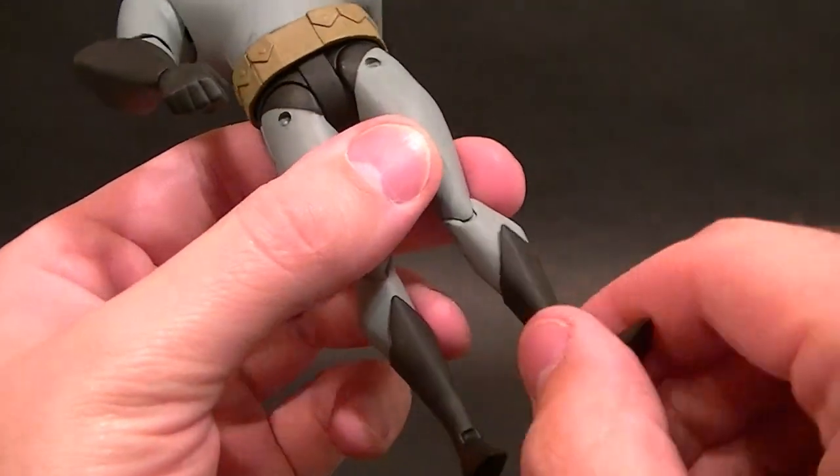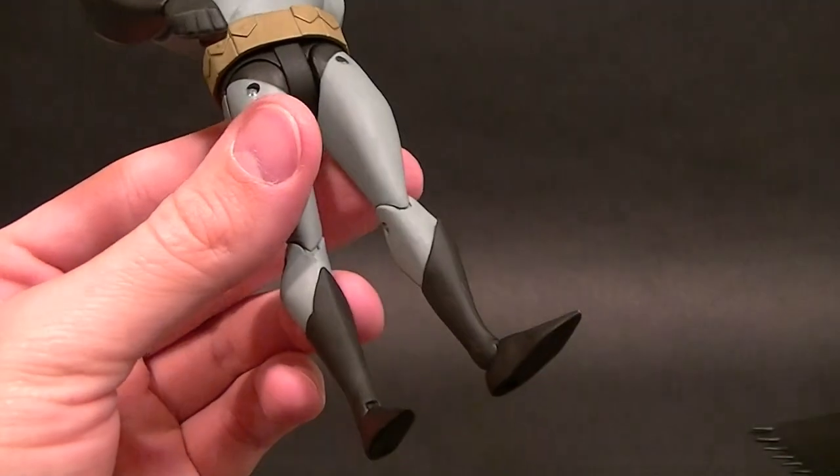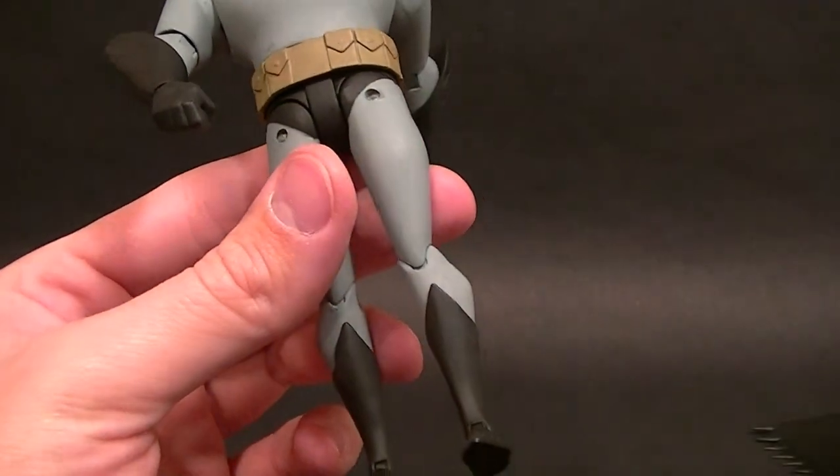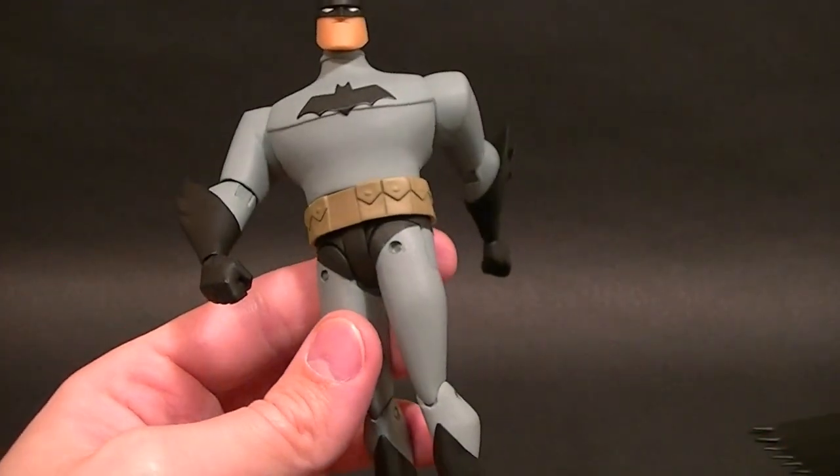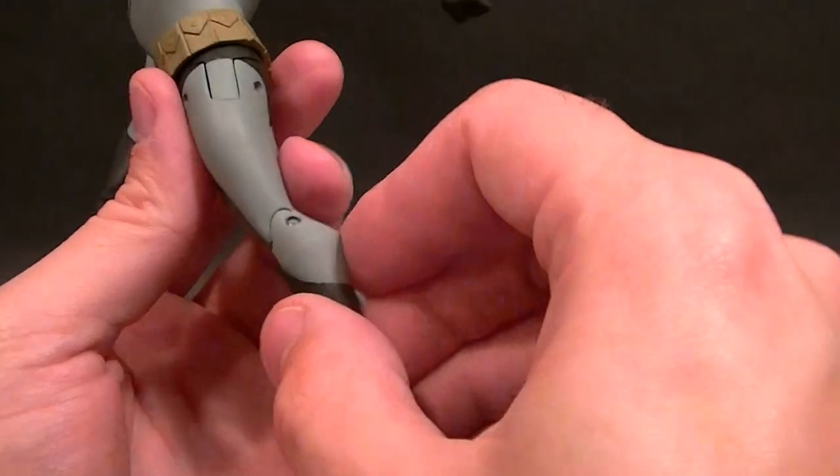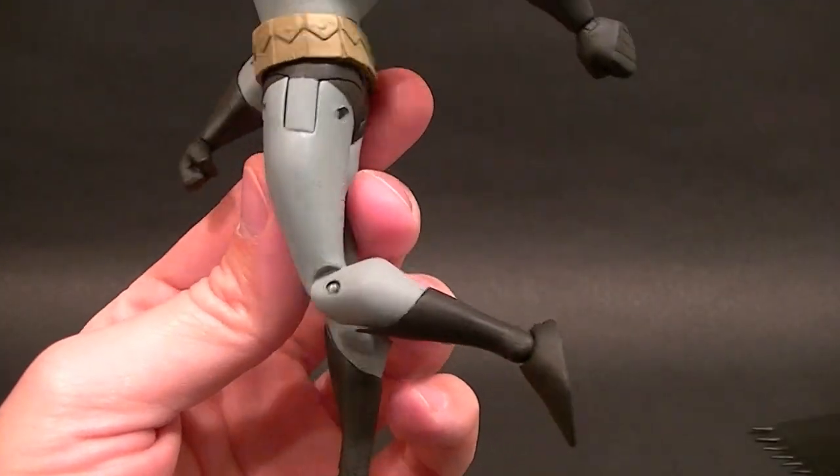We got a shin swivel which isn't a realistic point of articulation for a human being. A thigh swivel is, and a thigh swivel is much more practical on a figure for posing but we didn't get that, so that's really disappointing for me.